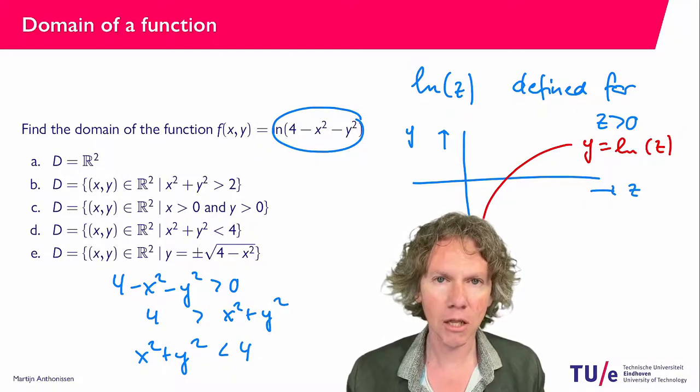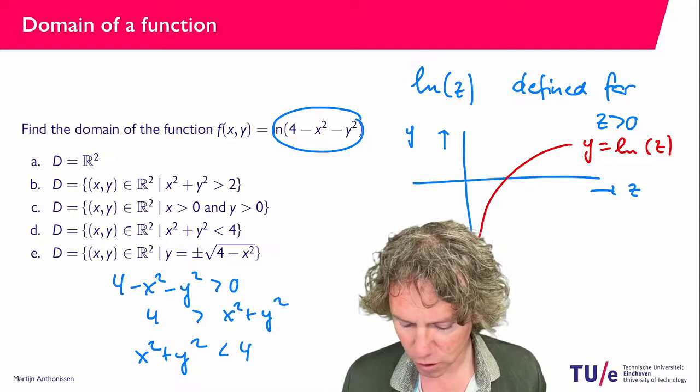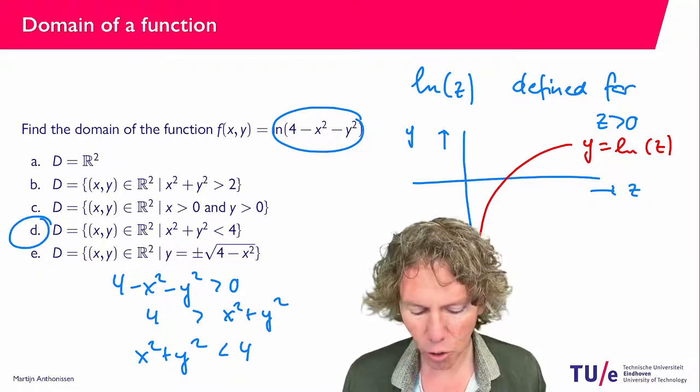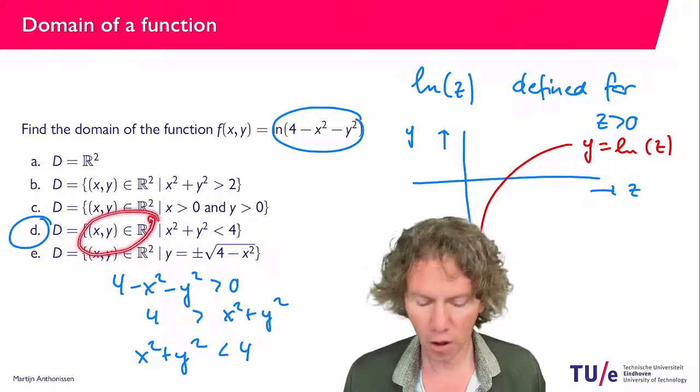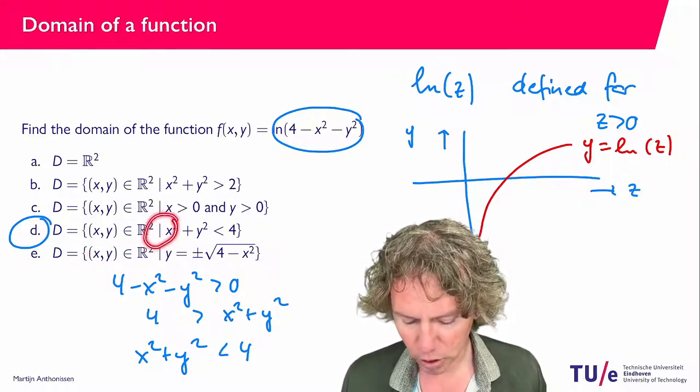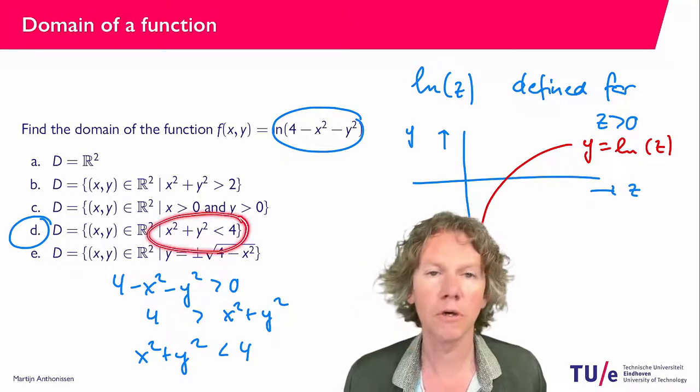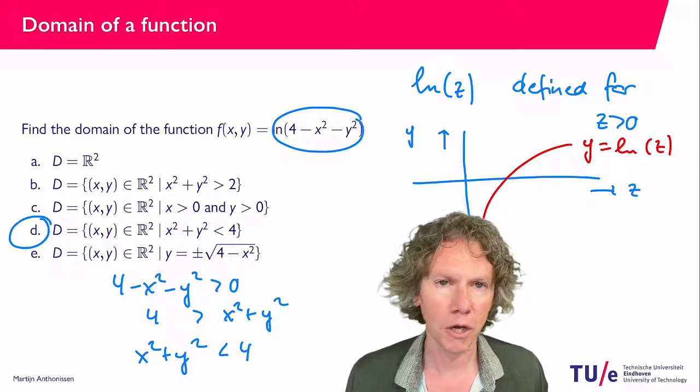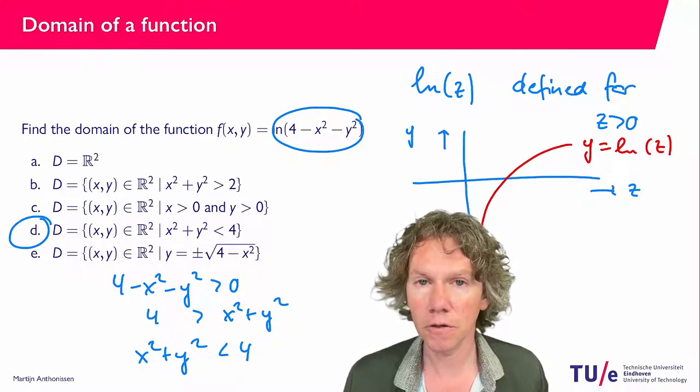and if you look at the options given then you see that apparently d is the correct answer because it considers all x and y values in the plane for which, so you can pronounce it as for which, the condition x squared plus y squared is less than 4 holds. So that answers this question on the domain of a function of 2 variables.